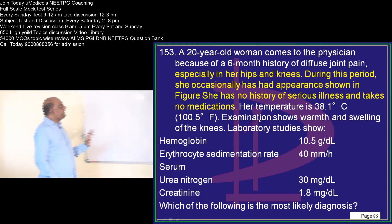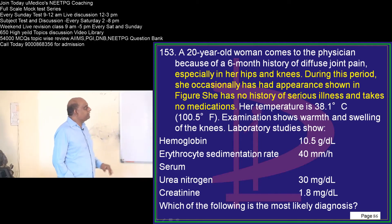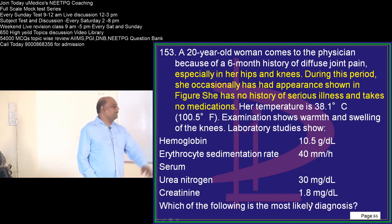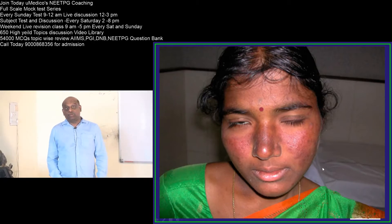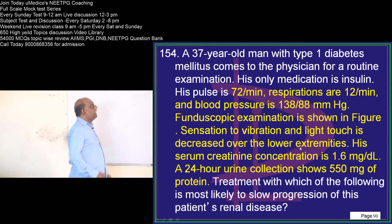She has no history of serious illness and there is a swelling of the knees. The hemoglobin is 10.5, creatinine is 1.8, ESR is 40, and you can see the presence of a malar rash. Classically, she is a case of systemic lupus erythematosus — that is what you need to appreciate.